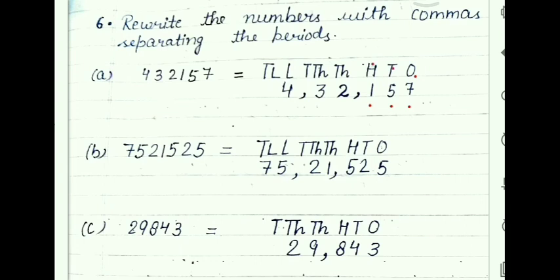So ones, tens, hundreds — put comma after completing one period, from right to left. Then thousand and ten thousand — second period is over, because in second period only two places are there. So put comma here. And lakh place: this is four only. We call this number: four lakh thirty-two thousand one hundred and fifty-seven.